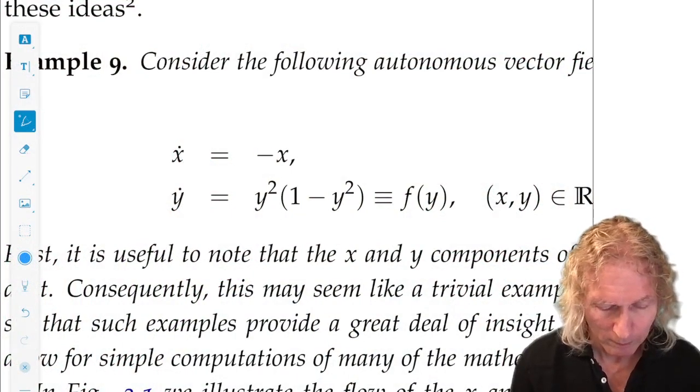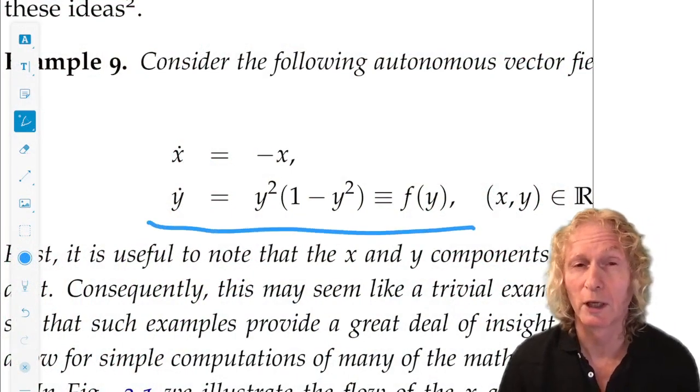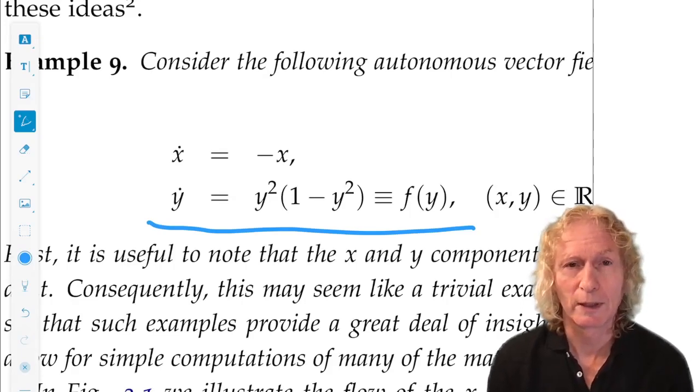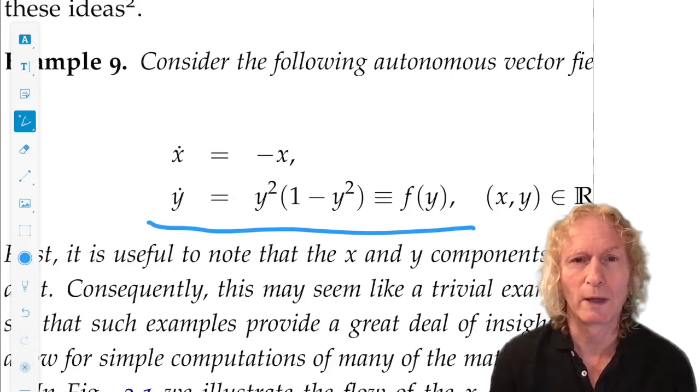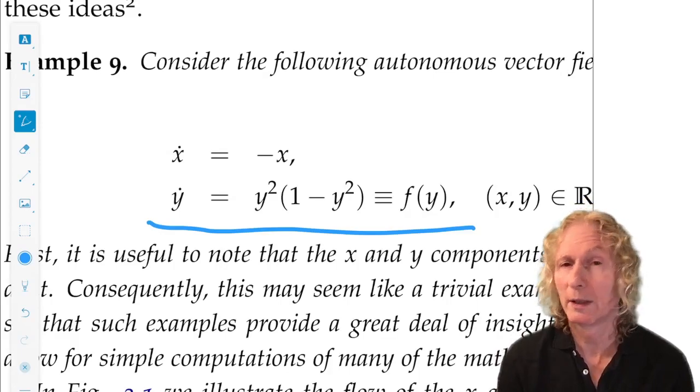So here's the example, it's a second order autonomous ODE: x dot equals minus x, y dot equals y squared times the quantity 1 minus y squared.